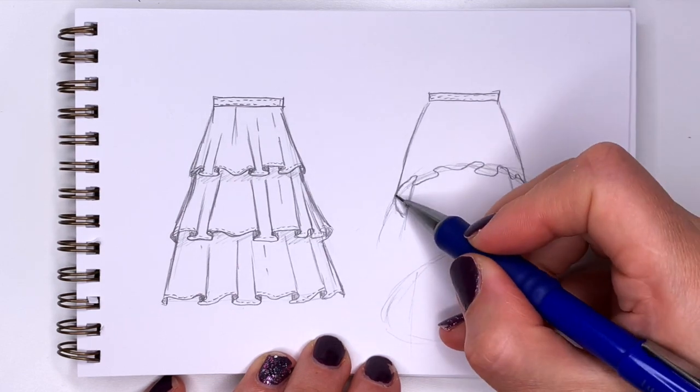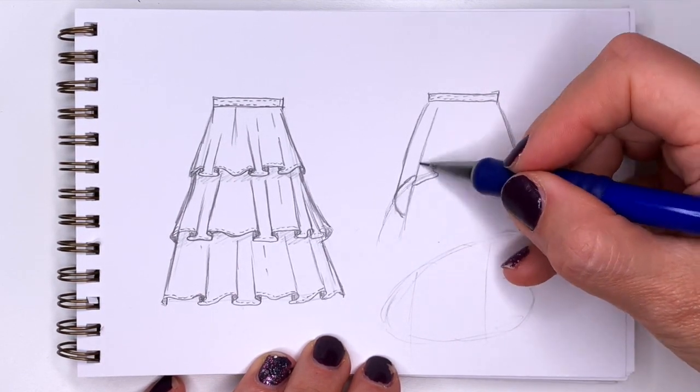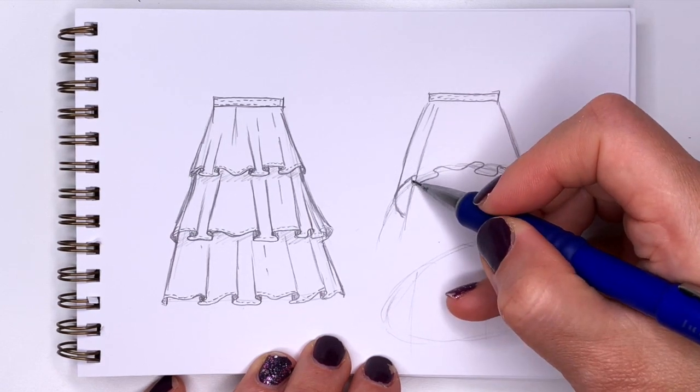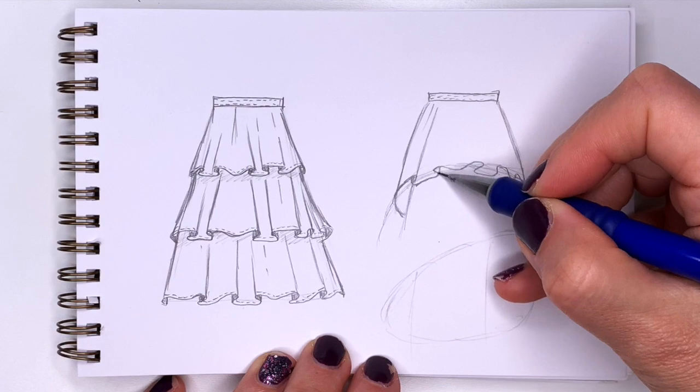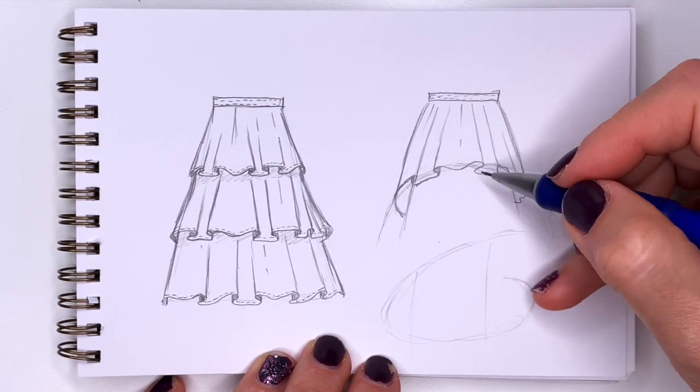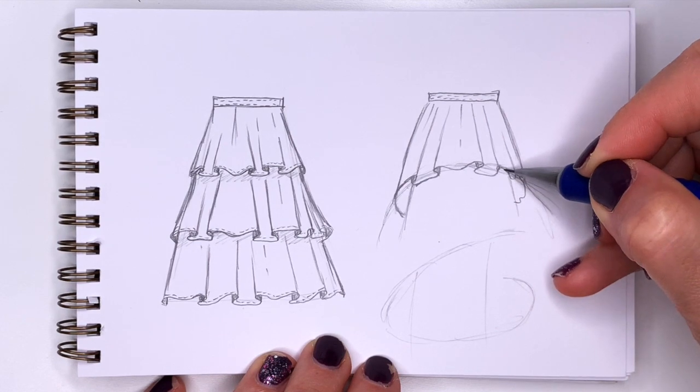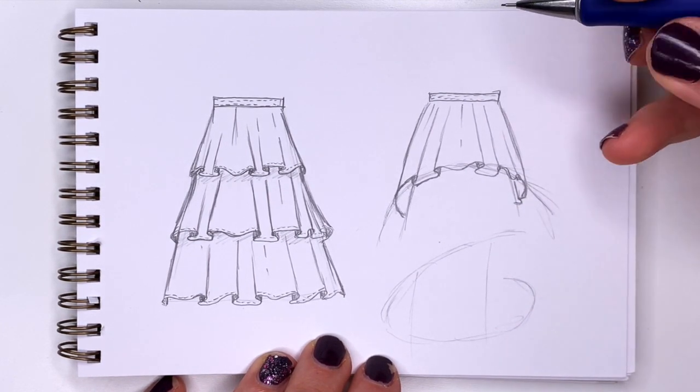And same thing like last time. To make it more realistic we're going to draw the lines going towards the top of the skirt. We're going to add shading here. And I'm going to add a line here for this ruffle that's in the back.